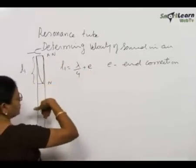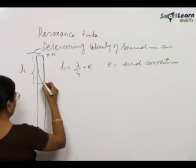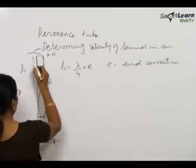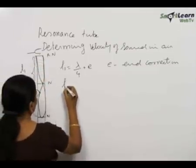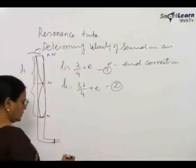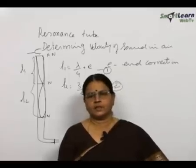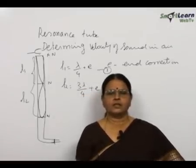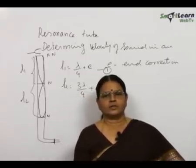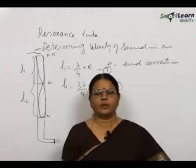Now drain the water further, repeating 2 or 3 times to get the average value of L1. Then drain some more water — at approximately 3 times L1, resonance will be heard again. Now we have one and a half loops, with a node at the new water surface. This distance is measured as L2, where L2 equals 3 lambda by 4 plus E. A vibrating tuning fork is placed near the mouth, water is slowly drained until a booming noise is heard — meaning the air column has the same frequency as the tuning fork, i.e., the air column is in resonance. Measure this water level distance from the top as L1.